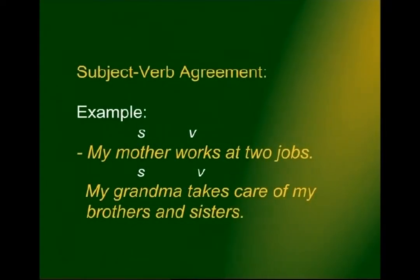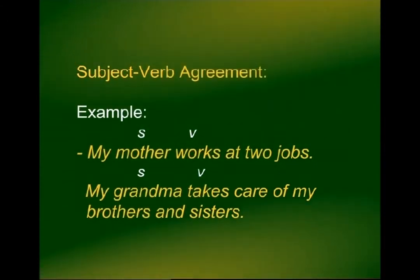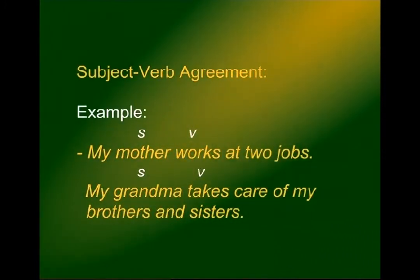Most students have no problem handling a simple sentence where it is not difficult to make the subject and verb agree or match. Take this simple sentence: 'My mother works at two jobs. My grandma takes care of my brothers and sisters.' In this straightforward sentence, 'mother' is the subject and 'works' is the verb. In the second sentence, 'grandma' is the subject and 'takes' is the verb. In today's lesson you shall learn about situations that can cause problems with subject-verb agreement.